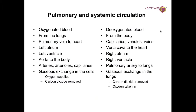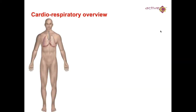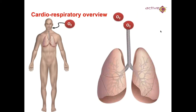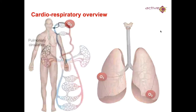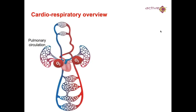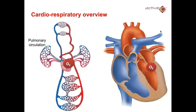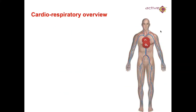We've already discussed pulmonary and systemic circulation, and here you can see it in the diagram. Oxygenated blood comes in, into the lungs where gaseous exchange takes place — as you can see in the pulmonary circulation. Oxygenated blood goes in and out, around to the body.